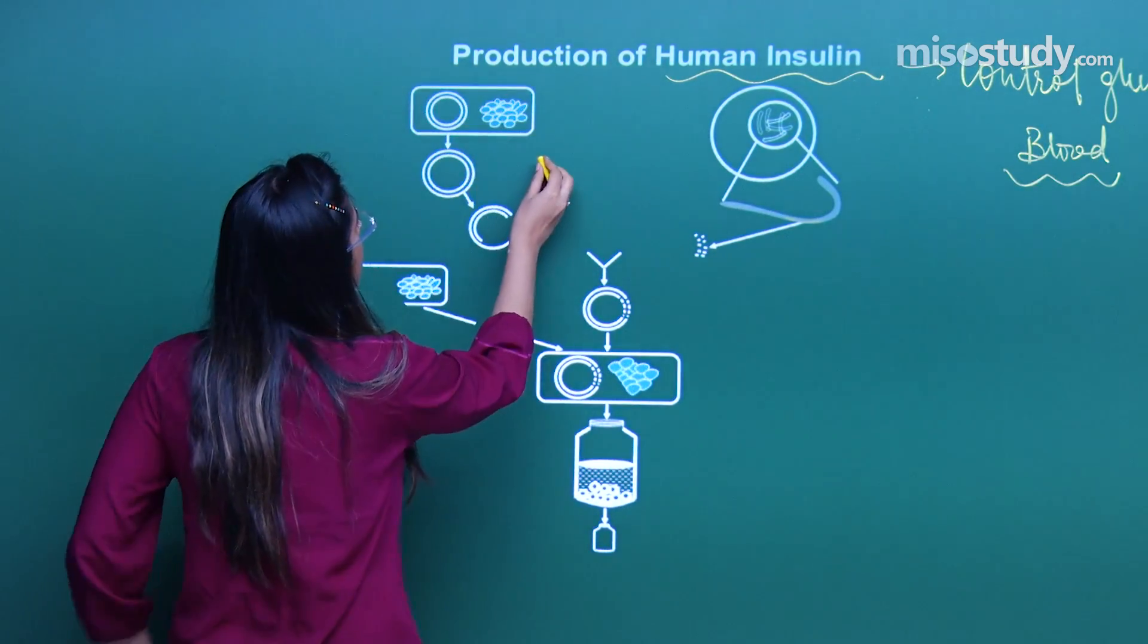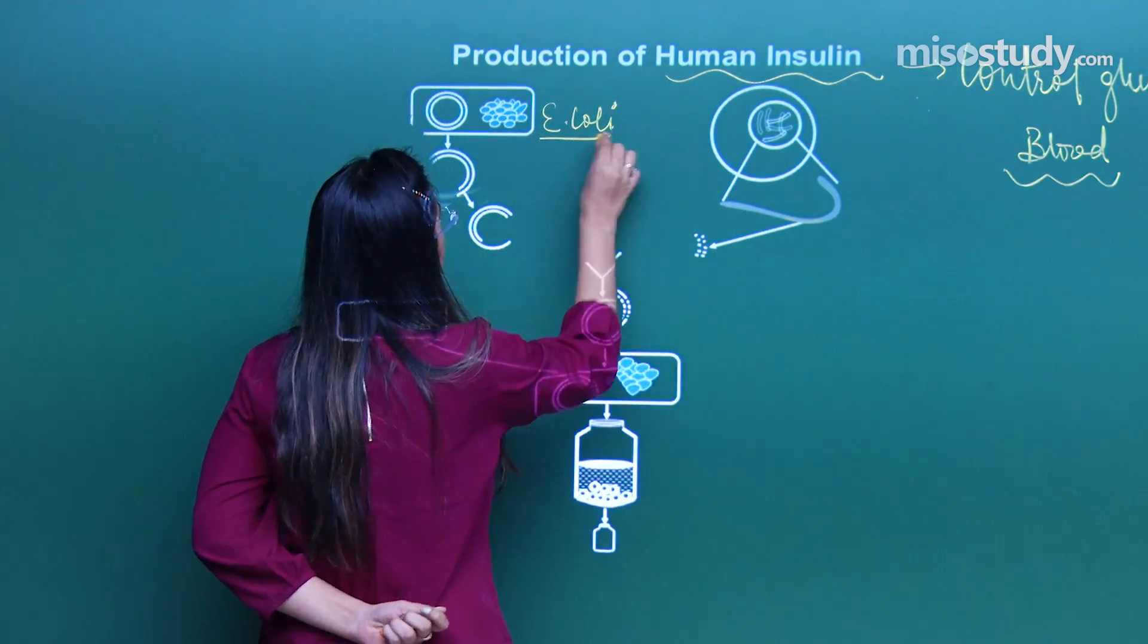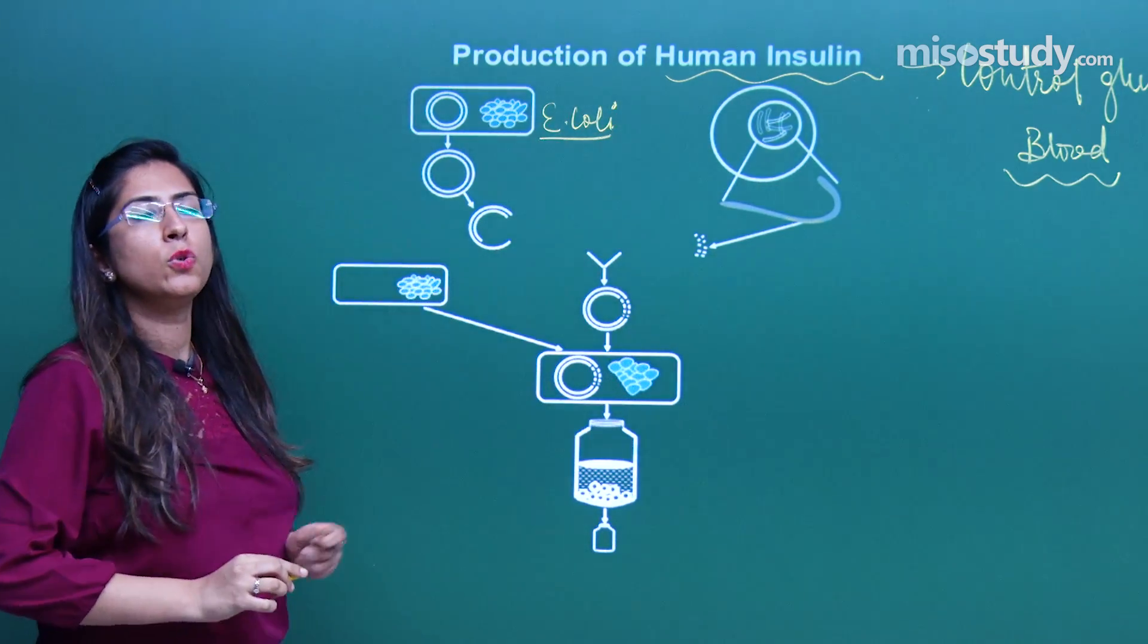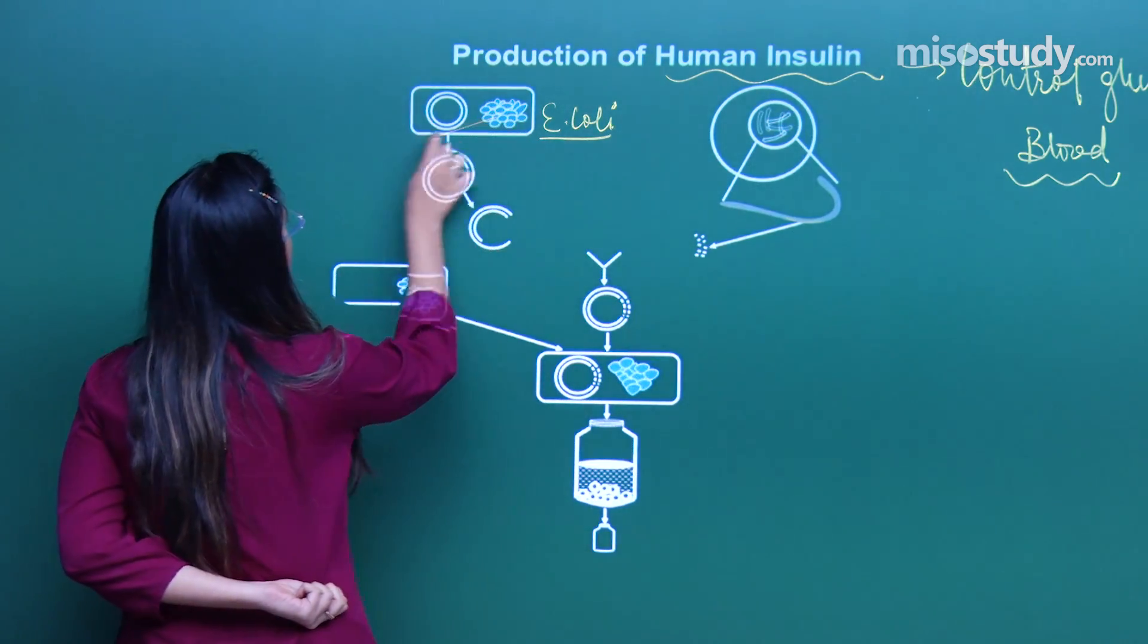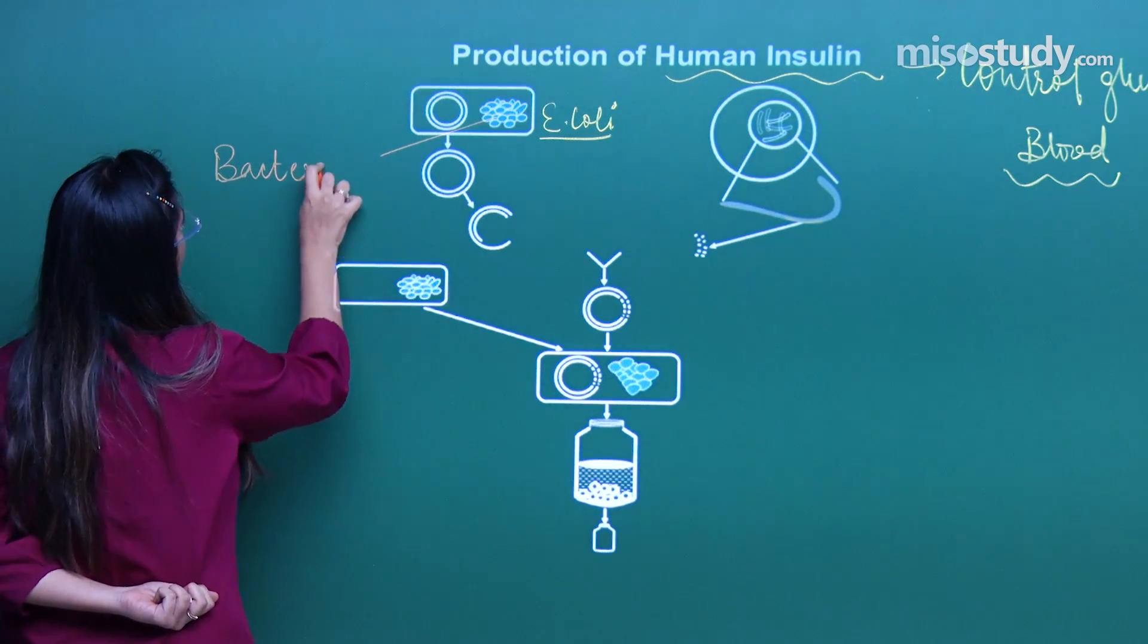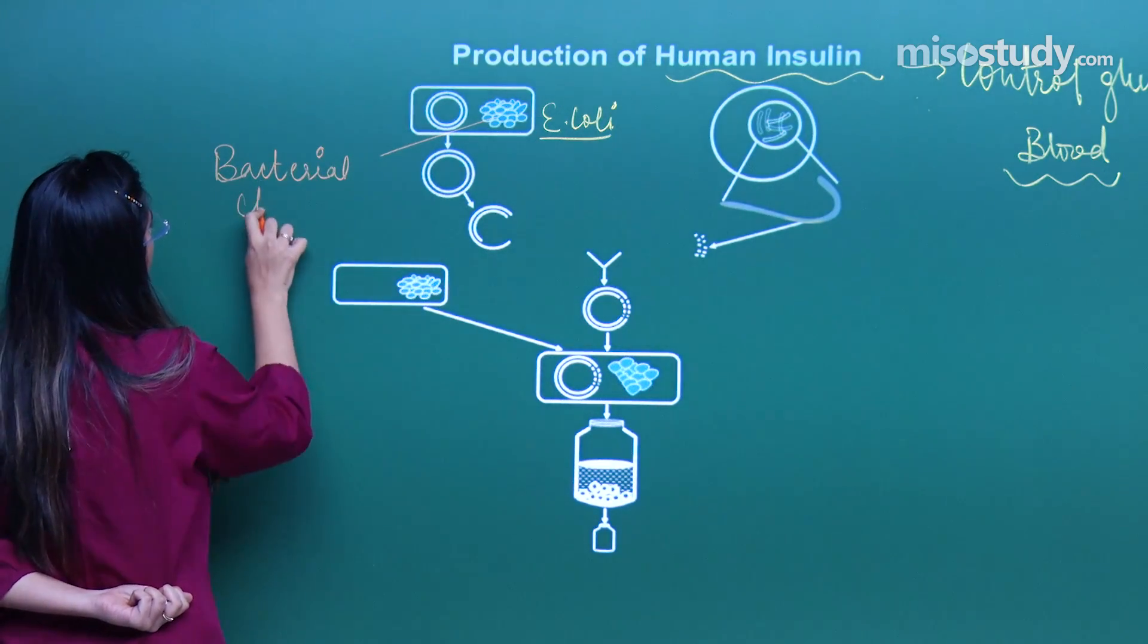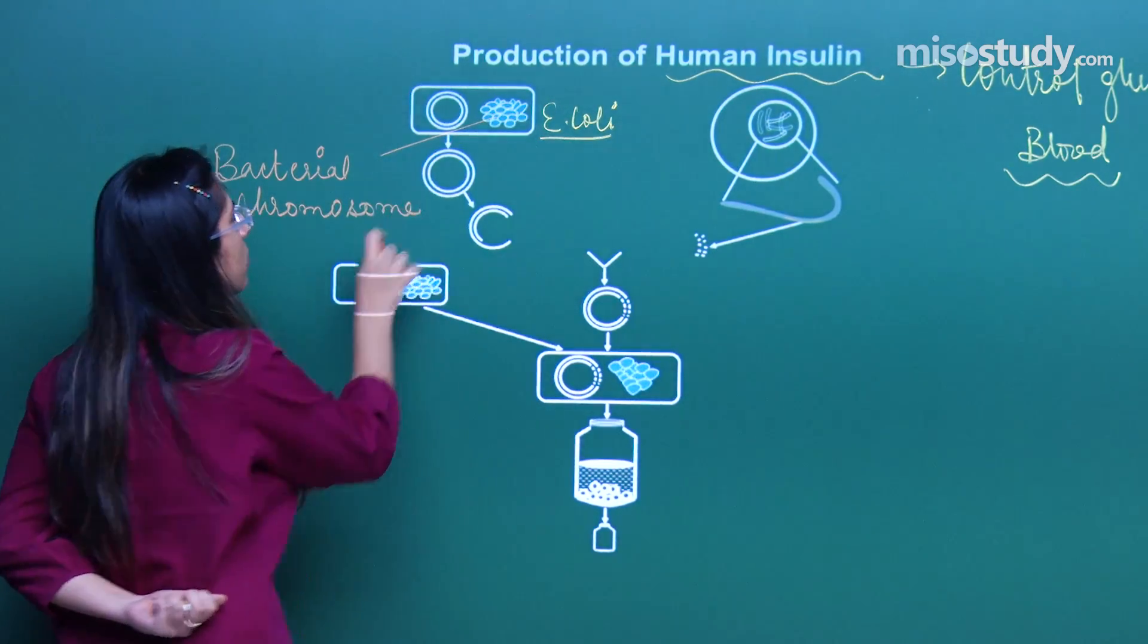So what is this? This is an E. coli cell. In the E. coli cell, two types of chromosomes are present. One is called the bacterial chromosome. This is the bacterial chromosome.